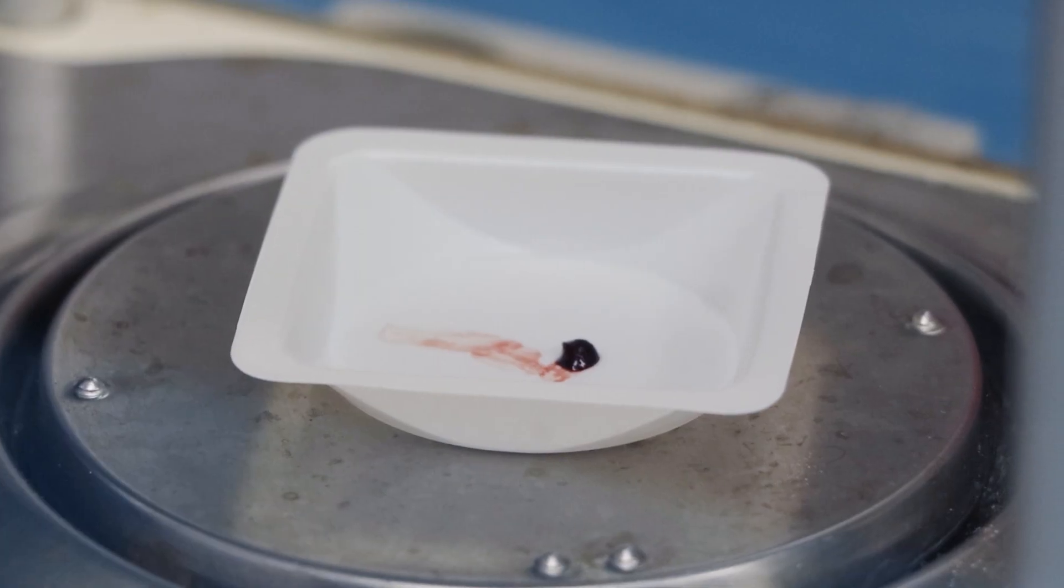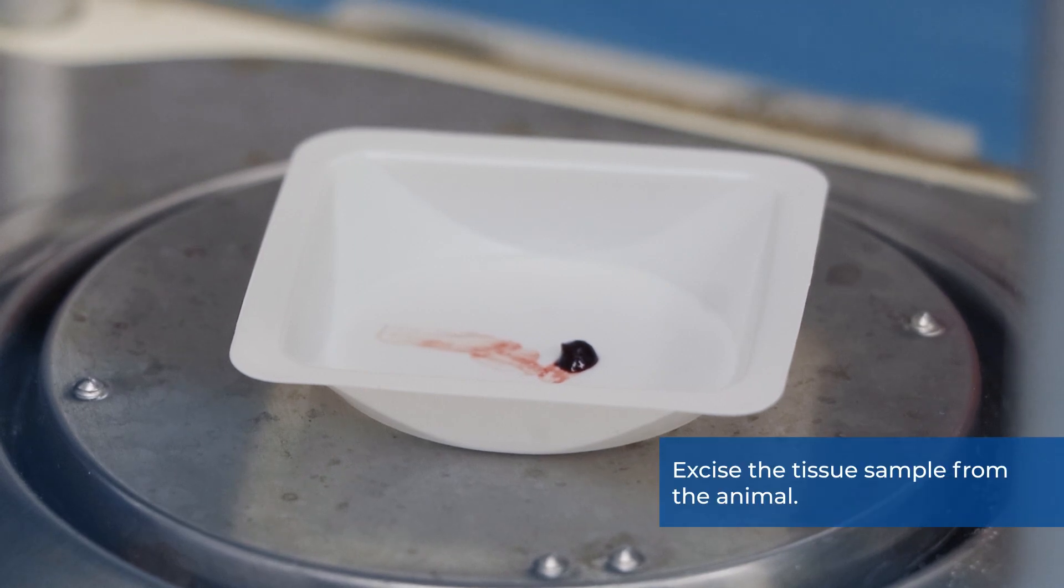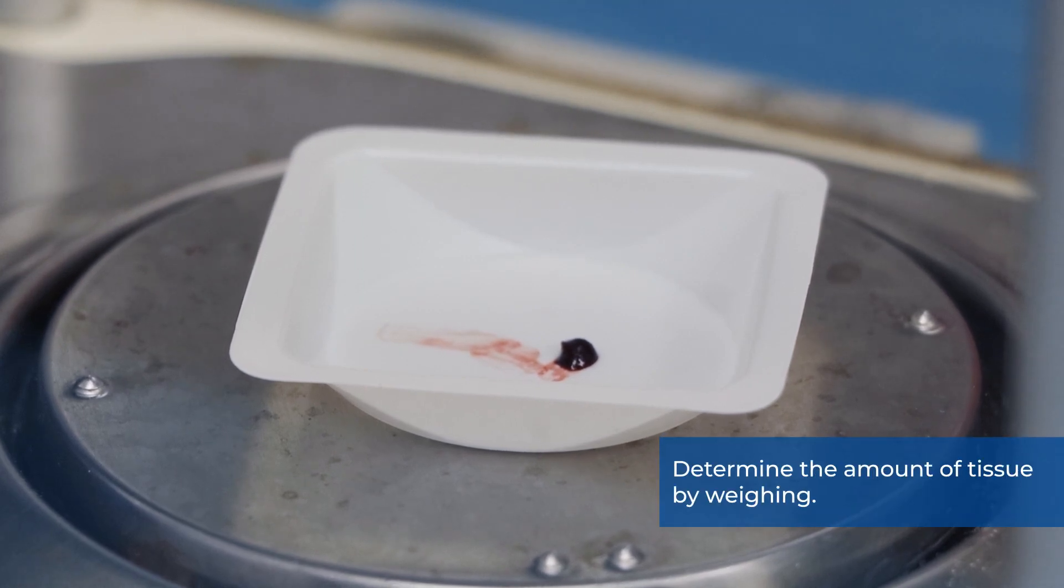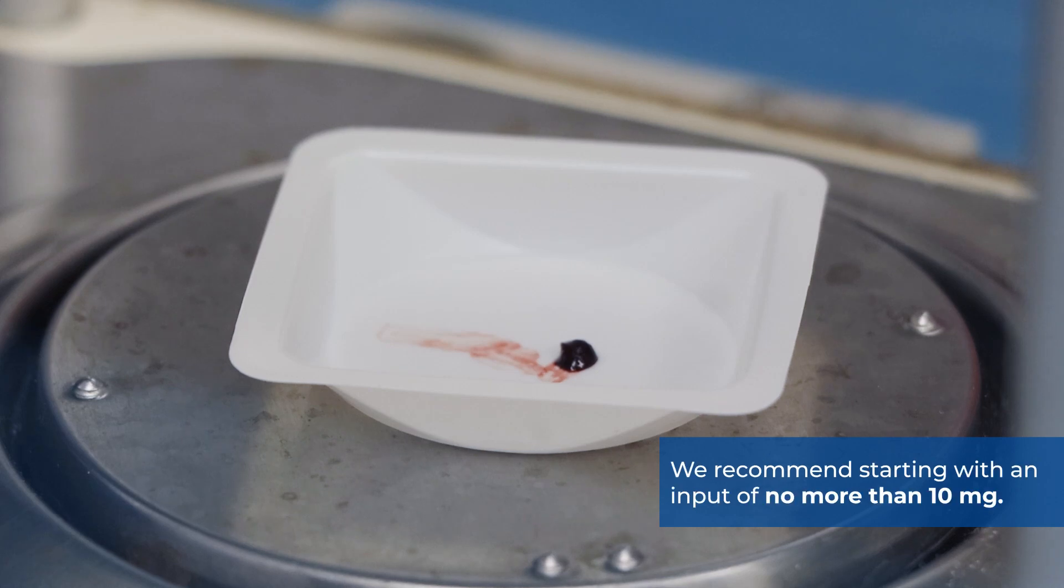Next, we will demonstrate cell lysate preparation from animal tissues. Excise the tissue sample from the animal. Determine the amount of tissue by weighing. We recommend starting with an input of no more than 10mg.